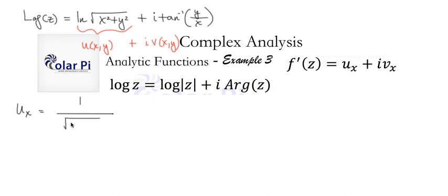root x squared plus y squared. And then chain rule again says we have to multiply by 2x times 2x, got it. Okay, that's ux.